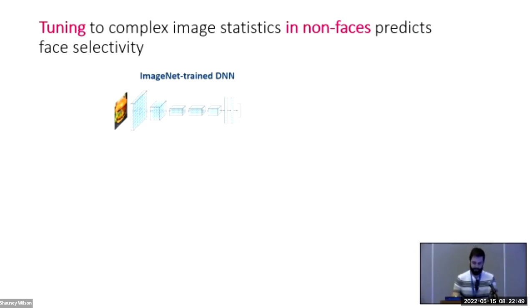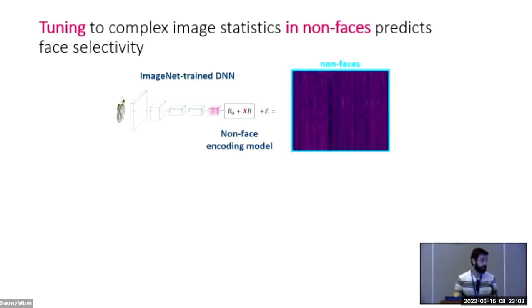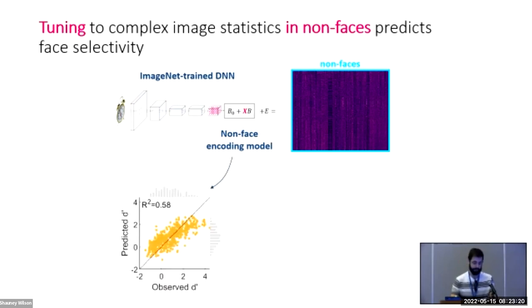If not these intuitive properties, what about more complex image attributes? We turn to deep neural networks trained on object recognition. These models achieve object classification by learning to extract complex image statistics, and we used these image statistics to fit encoding models for each neural site using only the responses for non-face objects. We found that these non-face encoding models could also predict face selectivity — the encoding axis estimated from non-face responses was on average as face-selective as the original neuron.